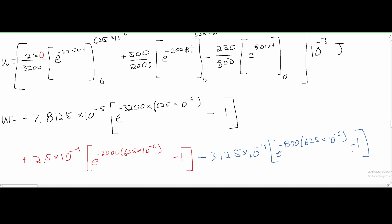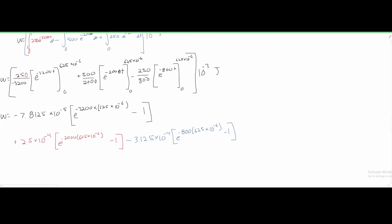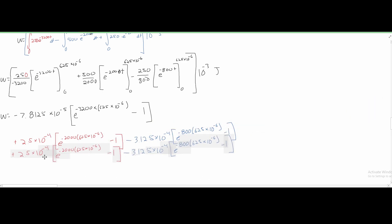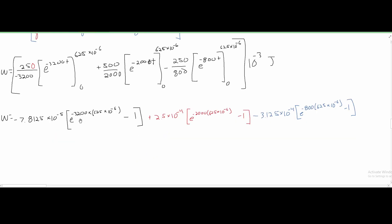We just have to carefully plug that entire expression into a calculator. After doing so, we get w equal to 1.21373×10⁻⁵. We cannot forget our units — this is in joules.